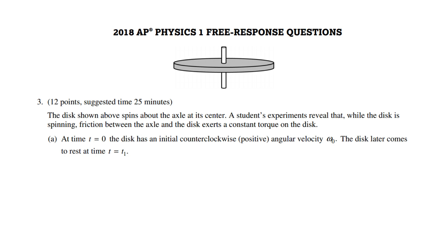This is a video of free response question number 3 from the 2018 AP Physics 1 exam. There is a disc shown that spins about the axle at its center. A student's experiments reveal that while the disc is spinning, friction between the axle and the disc exerts a constant torque on the disc.